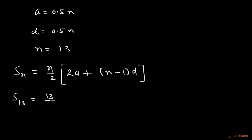So, we can write 13 here and we know a, the a is 0.5π and d is also 0.5π.